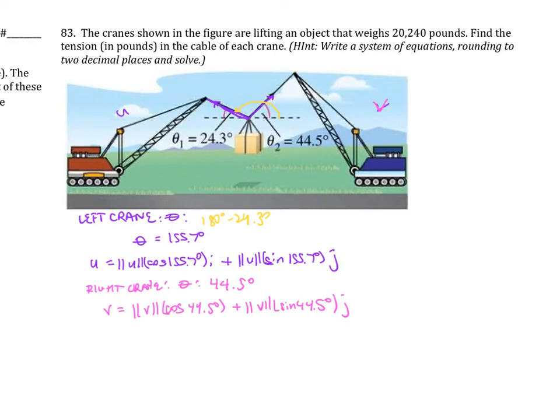Now looking at the forces we have, we know that X equals zero, right? They're pulling exactly in these opposite directions. We also know that this is a weight pulling down, and that is 20,240 pounds. So we can say that's our Y value: Y equals 20,240 pounds.